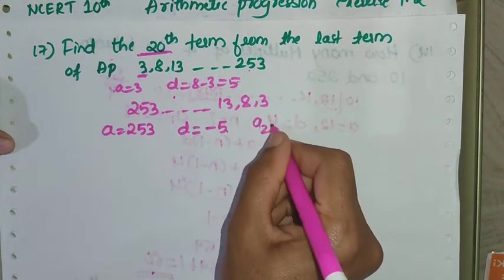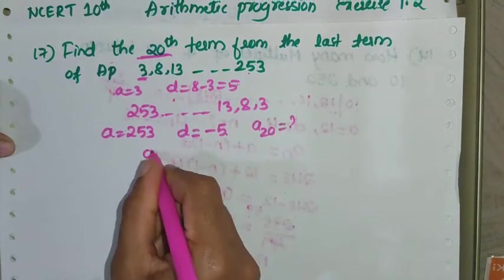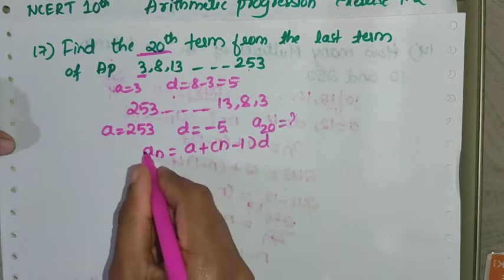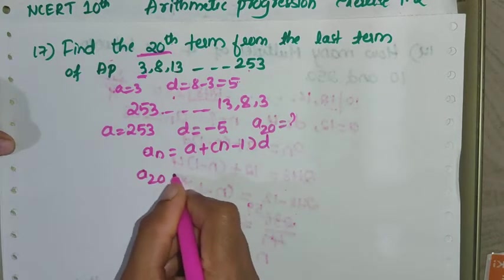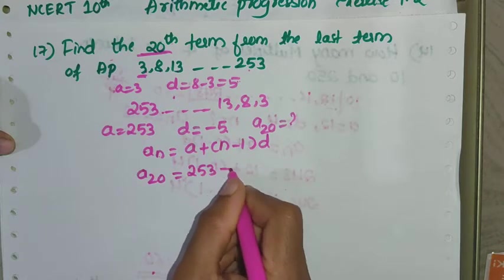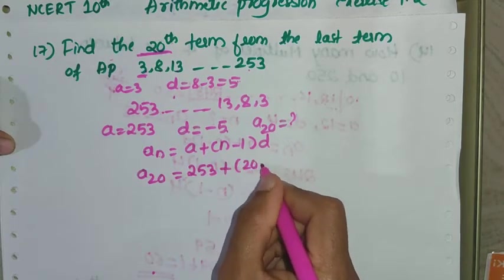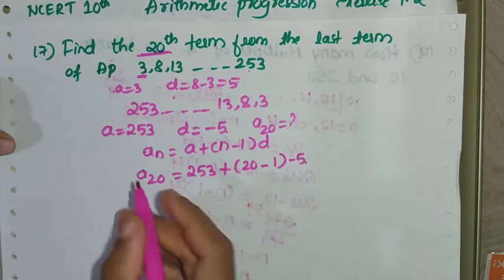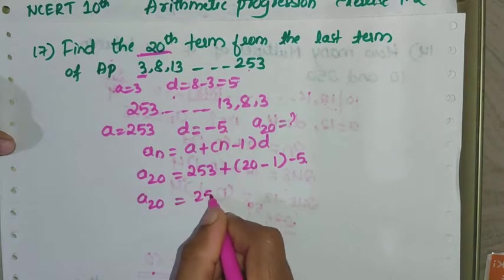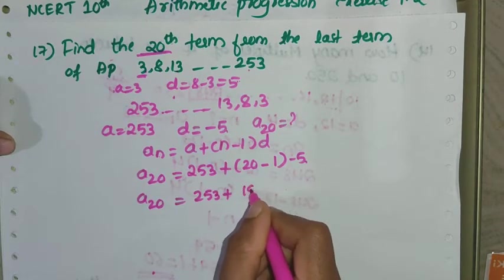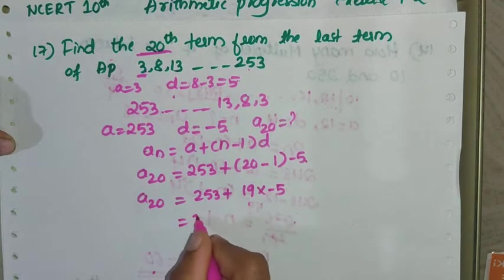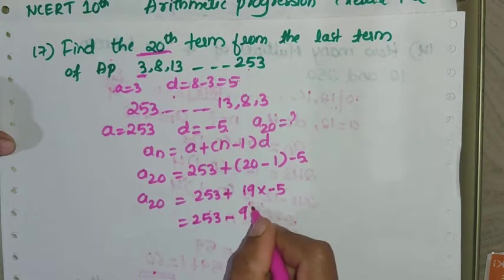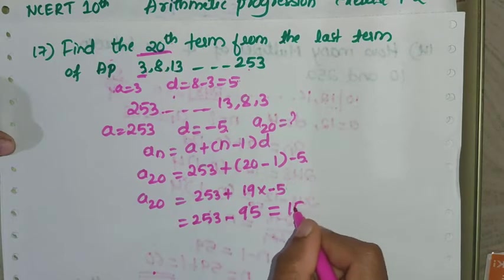Now find the 20th term. The formula is: a_n = a + (n-1) × d. So a_20 = 253 + (20-1) × (-5) = 253 + 19 × (-5) = 253 - 95 = 158.